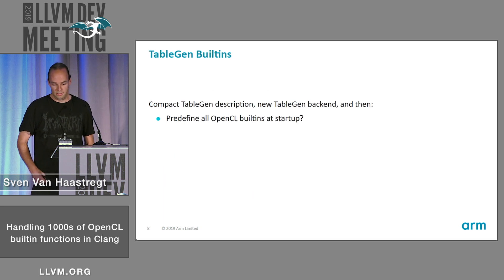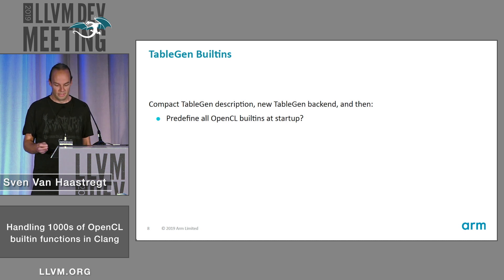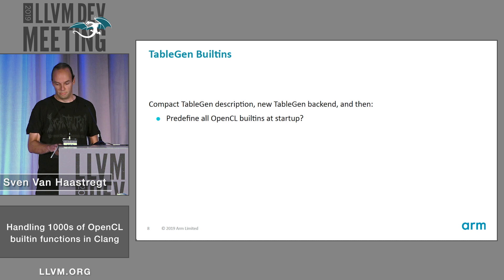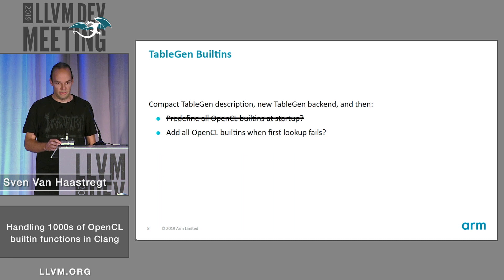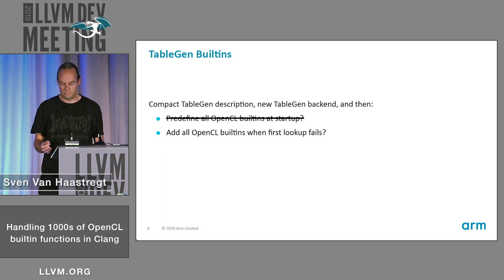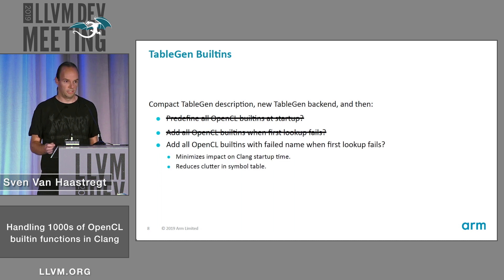The grand solution we are looking at — what this talk is about — is to handle them with TableGen. The idea is we have a nice and concise TableGen description and a new Clang TableGen backend. We could define all the OpenShell built-ins at startup of Clang, but that's probably not ideal because it's going to clutter the Symbol Table and be slow to populate. We could add all these built-in functions whenever a first lookup fails. But what we actually want to do is only insert the built-in functions with the failing name.